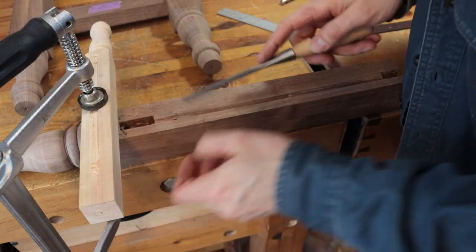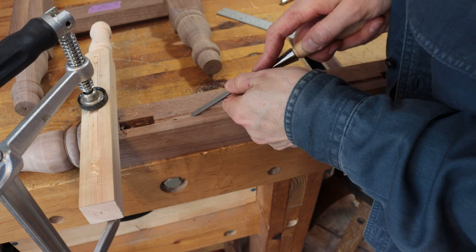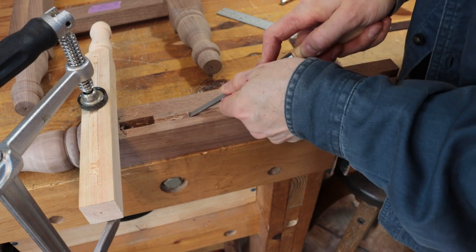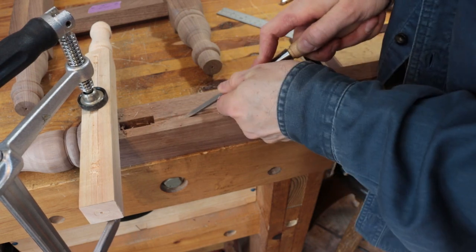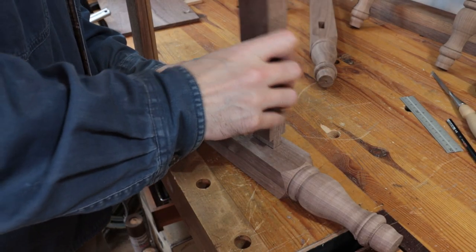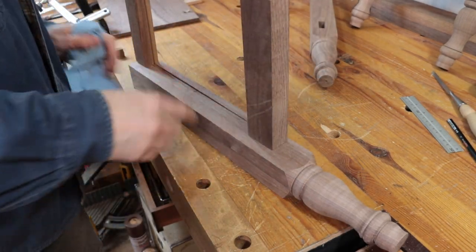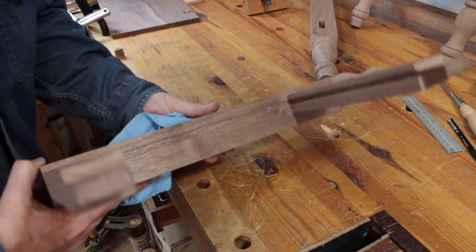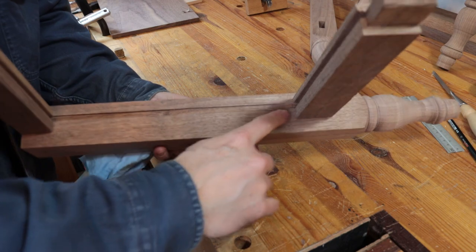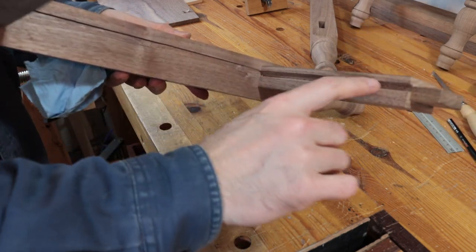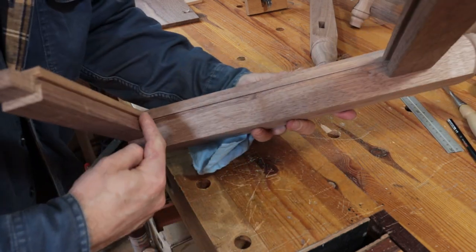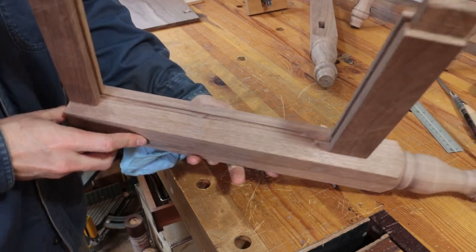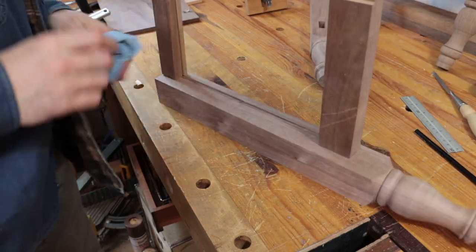If the groove for the dado is a little bit too shallow, then you just go back in with your chisel. As you can see now, I have a groove, a dado, for my panel that runs all the way around. Thanks for watching.